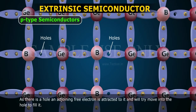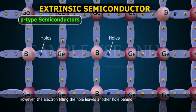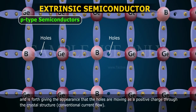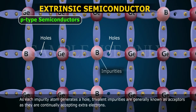As there is a hole, an adjoining free electron is attracted to it, and will try to move into the hole to fill it. However, the electron filling the hole leaves another hole behind, and so forth, giving the appearance that the holes are moving as a positive charge through the crystal structure, conventional current flow. So, as each impurity atom generates a hole, trivalent impurities are generally known as acceptors, as they are continually accepting extra electrons.